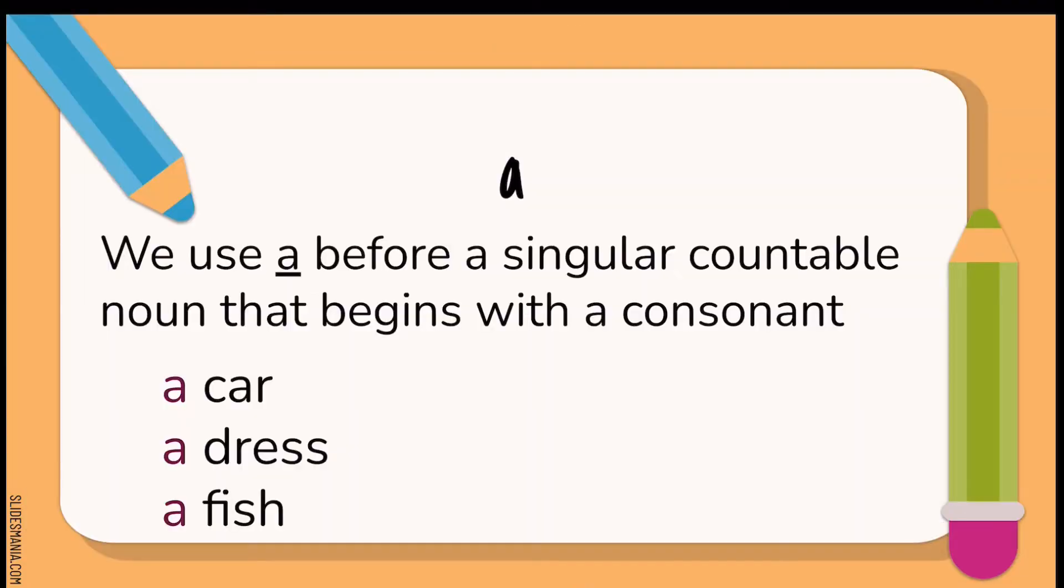We're going to concentrate on the singular. So, when do we use A? We use A before a singular countable noun that begins with a consonant. With a consonant meaning, not a vowel. Like a car, a dress, a fish.